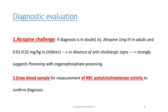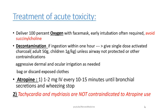For diagnosis, inject atropine 1 mg IV in adults and 0.01 to 0.02 mg per kg in children. If there are no anticholinergic signs, this strongly suggests poisoning with organophosphate. You can draw a blood sample for measurement of RBC acetylcholinesterase activity to confirm the diagnosis.